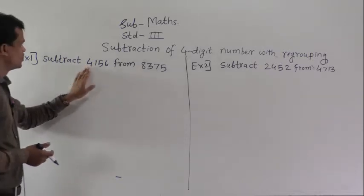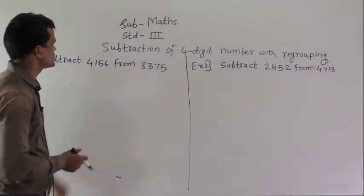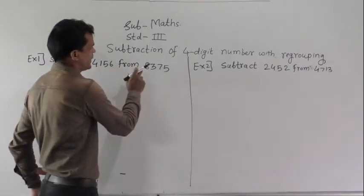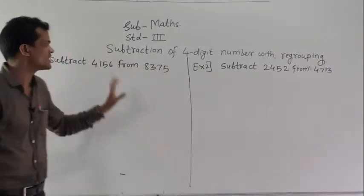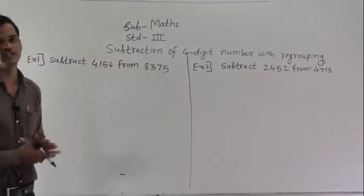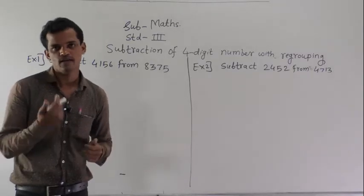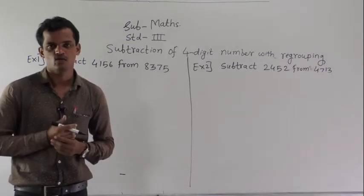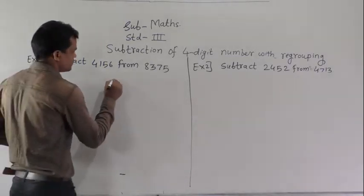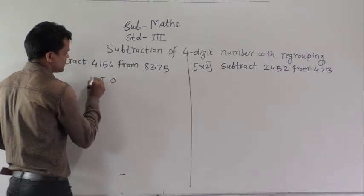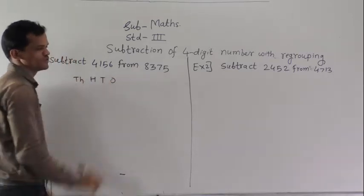Subtract 4,156 from 8,375. First, arrange these two numbers into columns and then subtract. Write the columns: 1, 10, 100, and 1000 here.